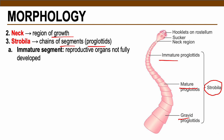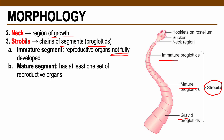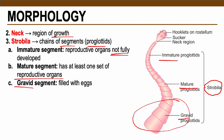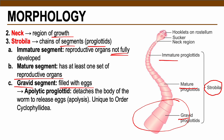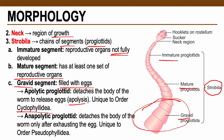The immature segment contains reproductive organs that are not fully developed. The mature segment contains at least one set of reproductive organs such as testes and ovary. The gravid segment, from the word gravid meaning pregnant, is the segment filled with eggs. There are two ways tapeworms release their eggs. The first is the apolytic proglottide — through the process of apolysis, the gravid proglottides detach to release eggs. These are unique to Cyclophyllideans; an example is Taenia species.